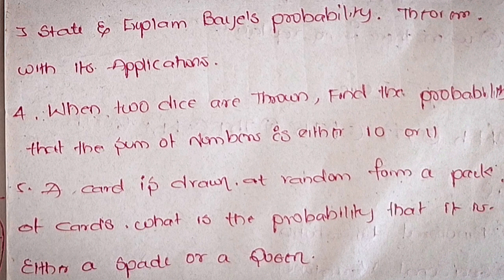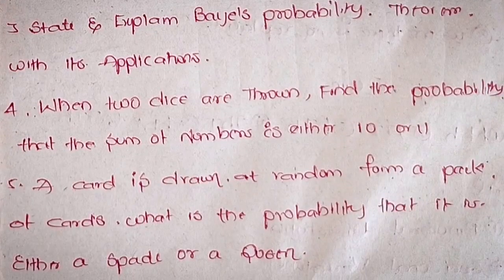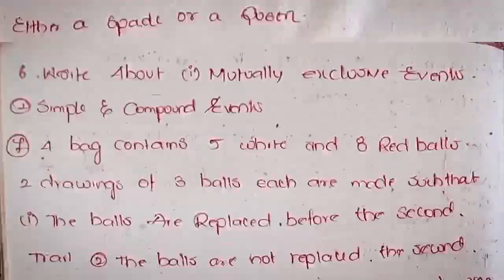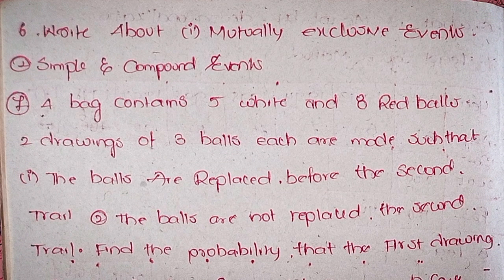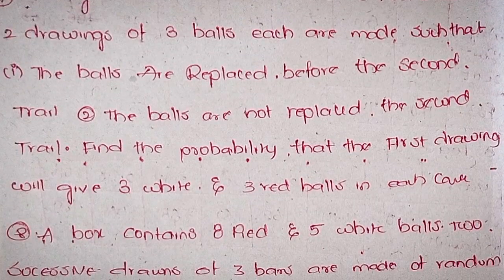Fourth, when two dice are thrown, find the probability that the sum of numbers is either 10 or 11. Fifth, a card is drawn at random from a pack of cards — what is the probability that it is either a spade or a queen? Sixth, write about mutually exclusive events, simple and compound events.